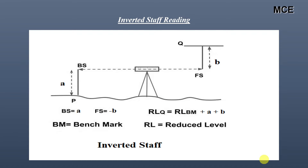An inverted staff reading is a staff reading that is obtained by holding the staff upside down and then recording the reading with a negative sign. Inverted staff readings are used to determine the reduced level of a point that is above the line of sight of the instrument — for example, the underside of a bridge, ceiling, or the bottom of a beam. When booking an inverted staff reading, it is entered into the leveling table with a minus sign, and the calculation then proceeds normally taking this sign into account.